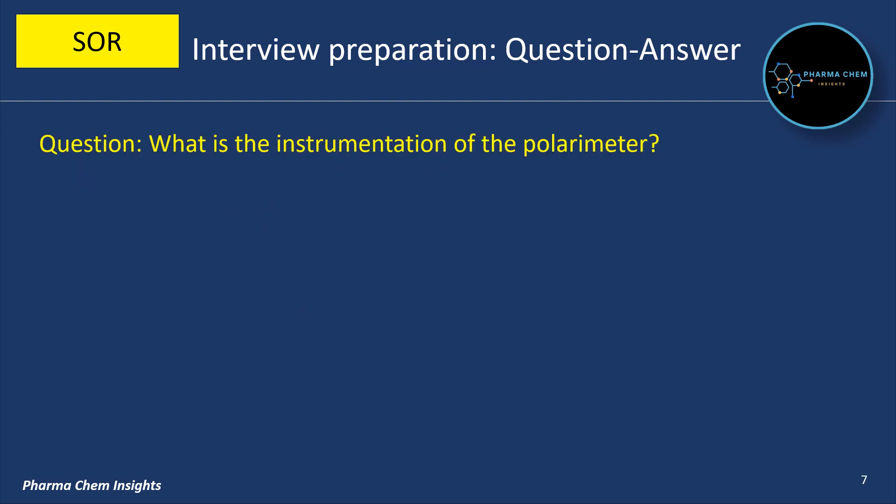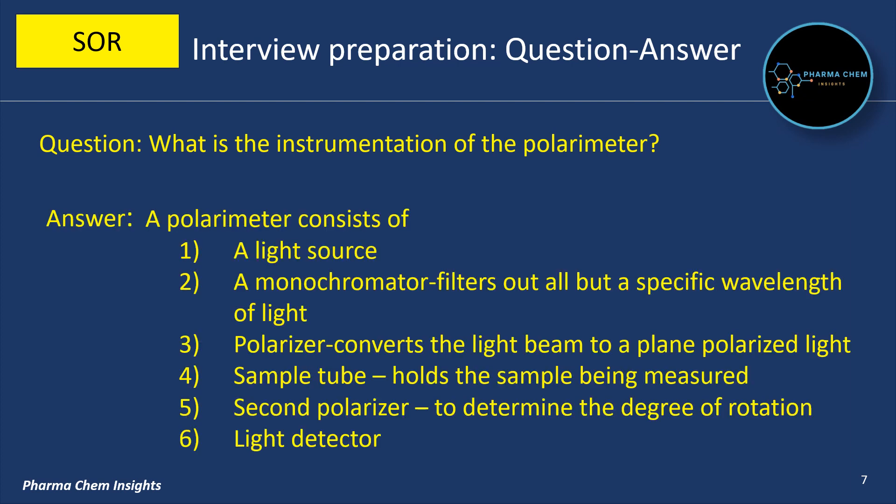What is the instrumentation of the polarimeter? A polarimeter consists of 6 components. First, a light source. Second, a monochromator that filters out all but a single specific wavelength. Third, a polarizer that converts the single light beam to a plane polarized light.